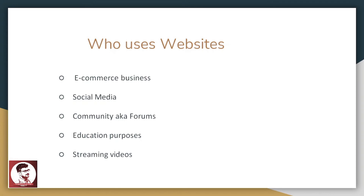Next is social media. Every person has a social media account — Twitter, Facebook, Instagram. They are on every social media. Next, community forums — that is community websites. In India, mainly Quora is used. In the case of programming, there are programming discussion community websites. There are also education purposes — every university has a website where you can search for whatever course you want, the fee structure, and courses available. You can search through websites.